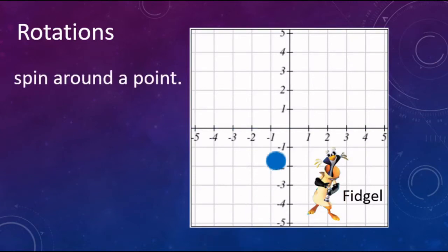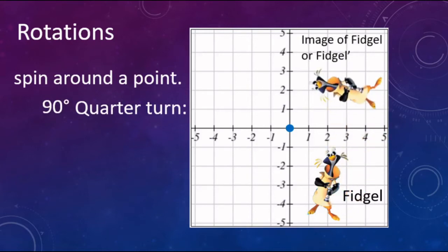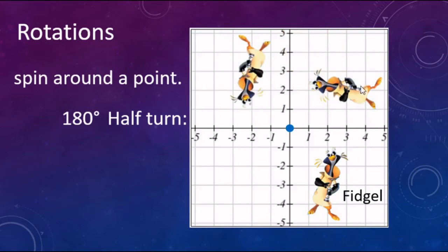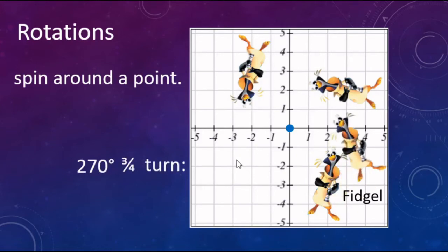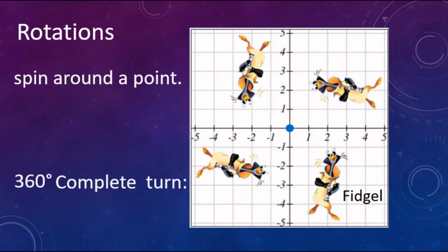Looking at rotations — rotation is where you spin around a point, in this case the origin. A 90 degree rotation is a quarter of a turn, so Figil moves a quarter of a turn. A 180 degree rotation is a half turn. A 270 degree rotation is three quarters of a turn — moving three quadrants and ending up in the third quadrant. And a 360 degree rotation is a complete turn — Figil goes all the way around and back onto himself.